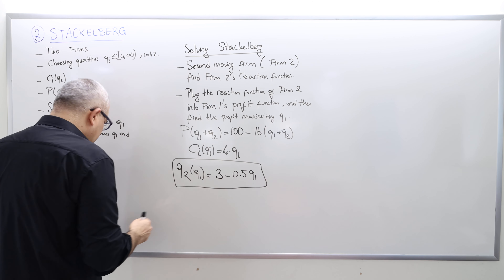The first order condition: dπ1/dQ1 = 48 − 16Q1 = 0. Solving this gives the optimal Q1* = 3.